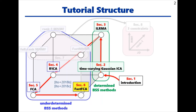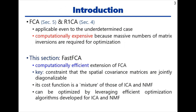This is section 6 of the tutorial. The section title is FastFCA. In this section, we introduce FastFCA for underdetermined BSS, which we proposed in 2018. FastFCA and FCA have the drawback of being computationally expensive because massive numbers of matrix inversions are required for optimization. FastFCA, introduced in this section, is a computationally efficient extension of FCA.